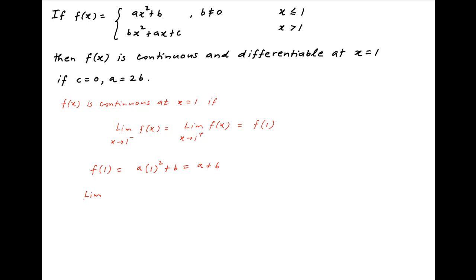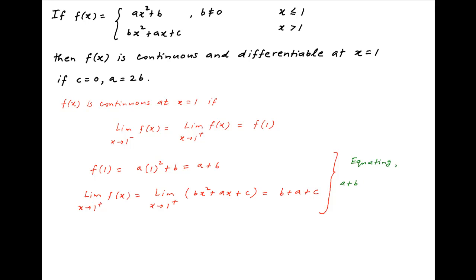The limit of f(x) as x tends to 1 from the positive side: since f(x) equals bx squared plus ax plus c when x is greater than 1, plugging in gives the limit as b plus a plus c. Equating this to f(1) gives a plus b equals b plus a plus c, so a and b cancel, leaving c equal to 0.